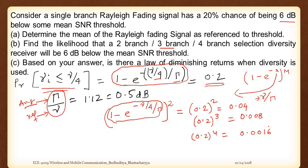The last question asks: is there a law of diminishing returns when diversity is used? When you are using diversity, the probability of failure is coming down - that means the probability of success is going on increasing. The more you induce diversity, the lower the probability that instantaneous SNR falls below the threshold. When we use fourth-order diversity, the probability of failure is very, very minimal.